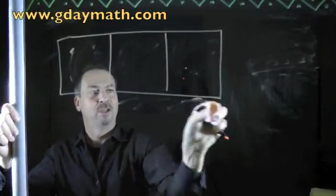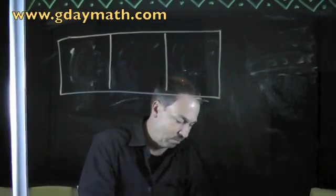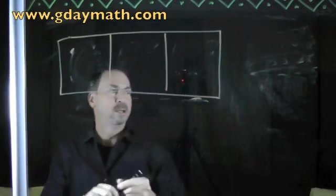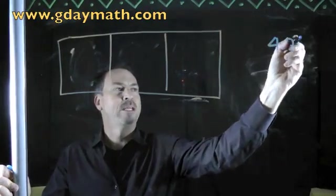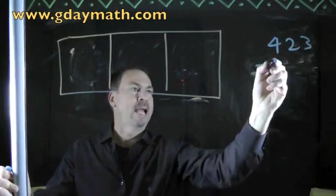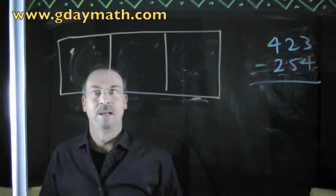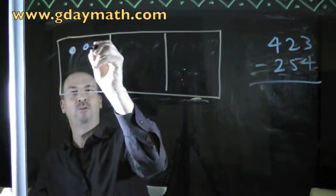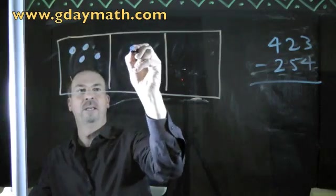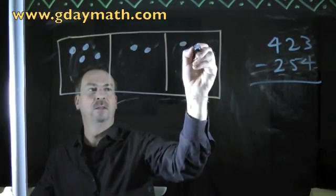And since my board is particularly smudgy, let's just change colours and see if that will help with smudginess. Let's go with blue this time. Let's try something like 423. And let's add to that the anti-version of 254. That is, 423 take away 254. Alright, let's draw it in a 10-1 machine. This is what 423 looks. Four hundreds and twenty-three.